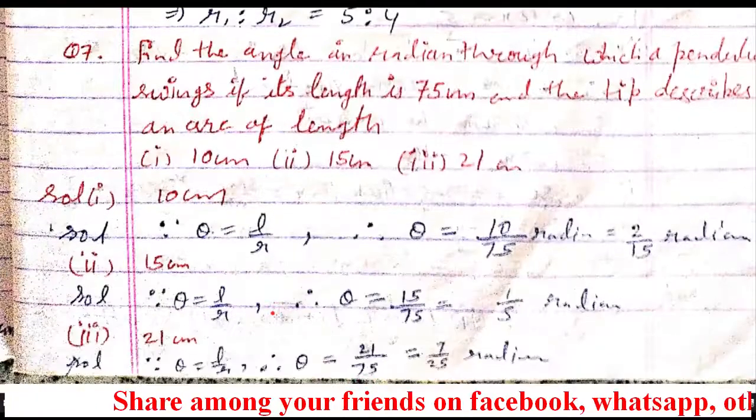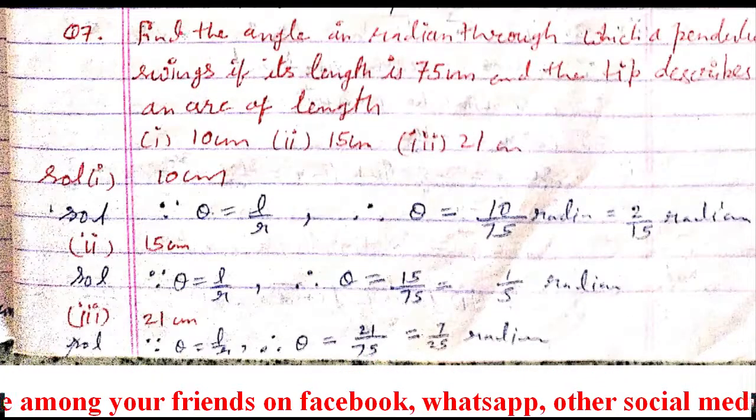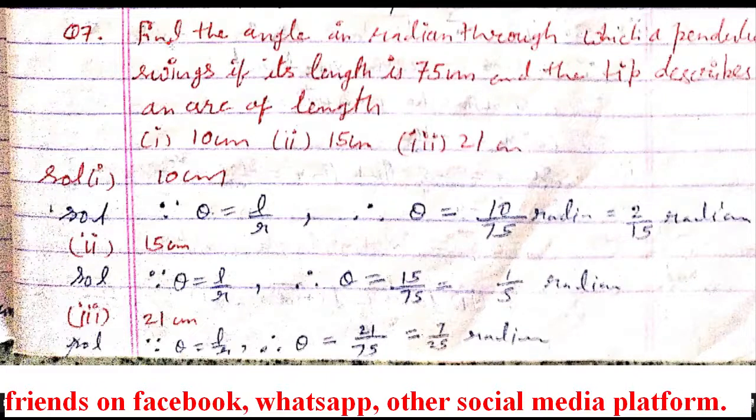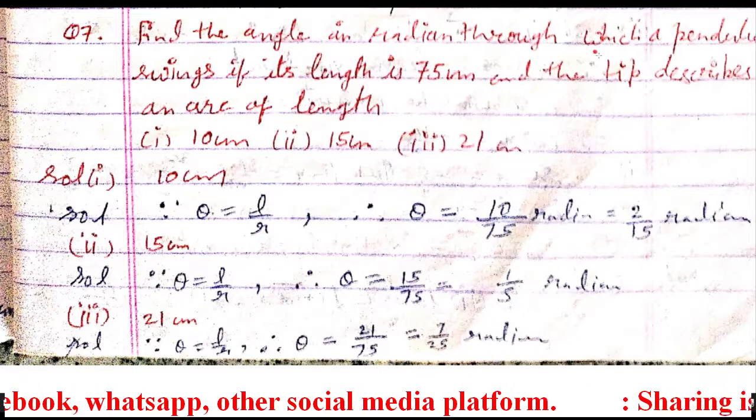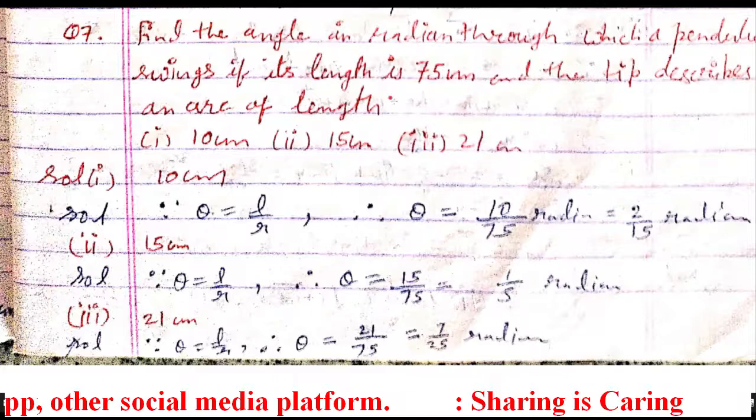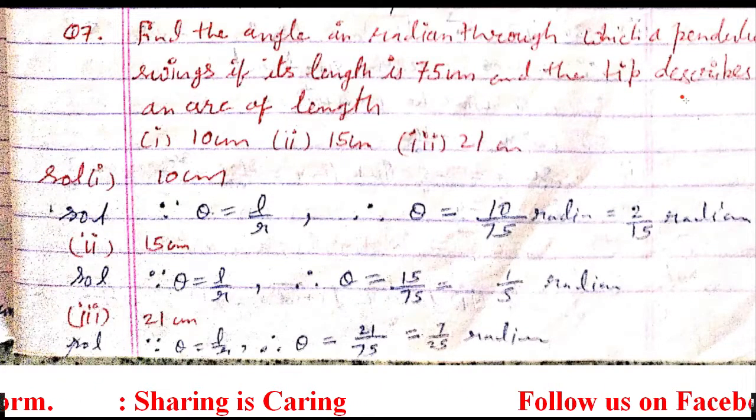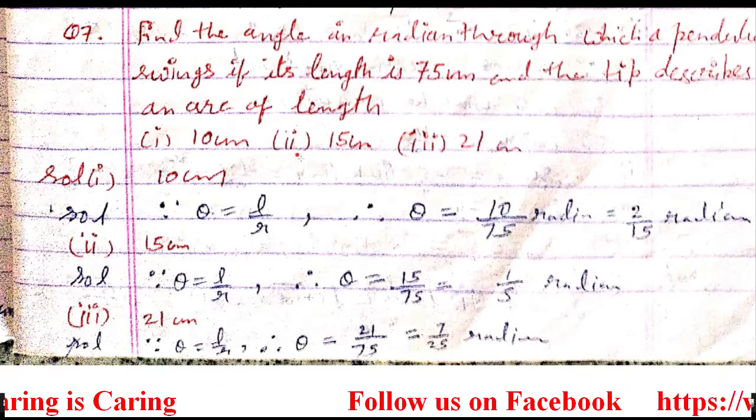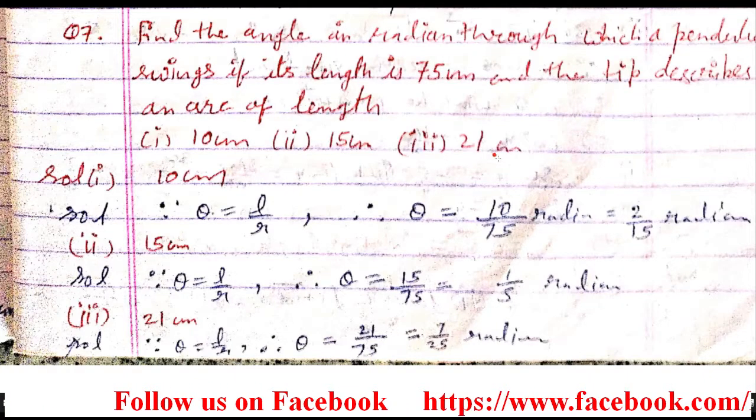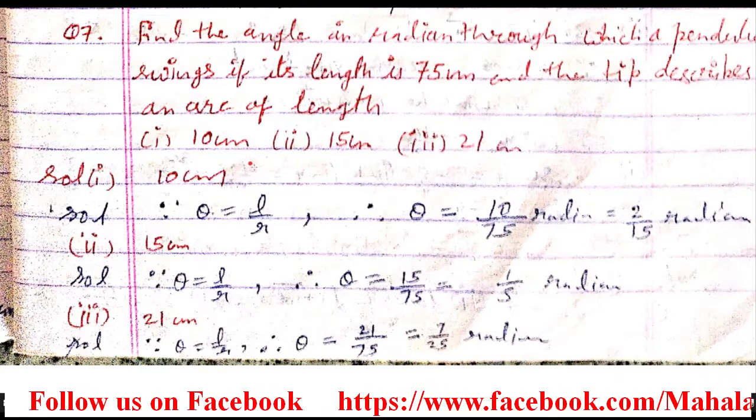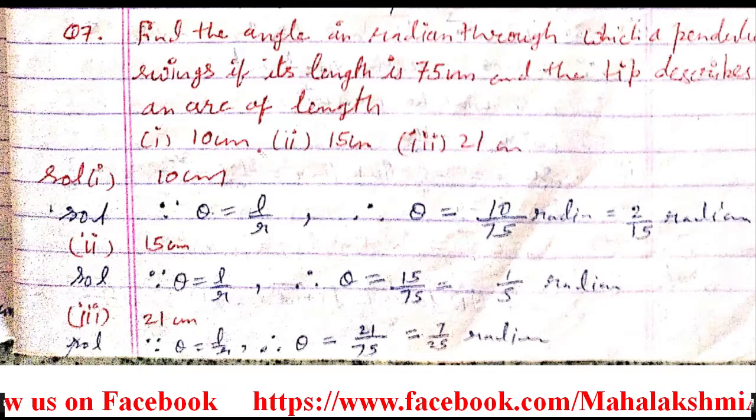Now we move to question number 7. The question is: find the angle in radians through which a pendulum swings if the length is 75 centimeters and tip describes an arc of length 10 centimeters, 15 centimeters, and 21 centimeters. I think figure is already available in your book.